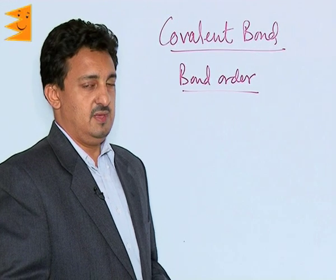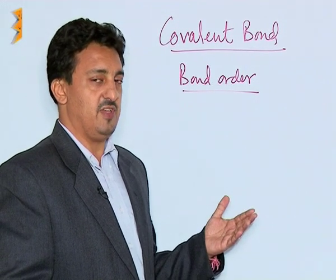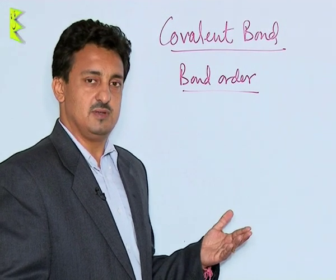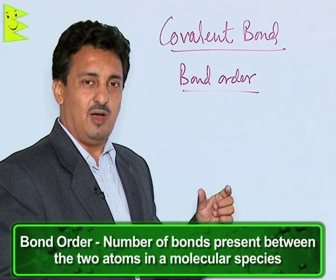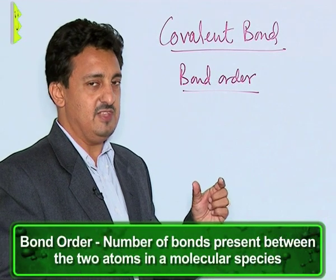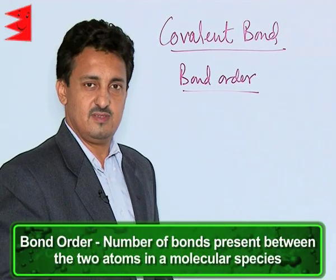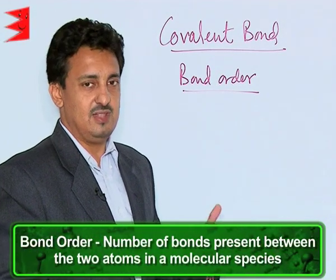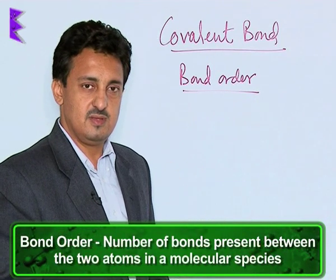Bond order is another very important property associated with covalent bonds. It is the number of bonds present between two atoms in a molecular species. That is called the bond order of that particular bond.